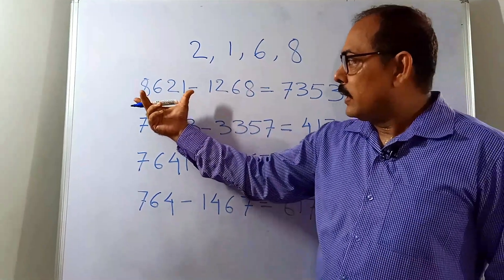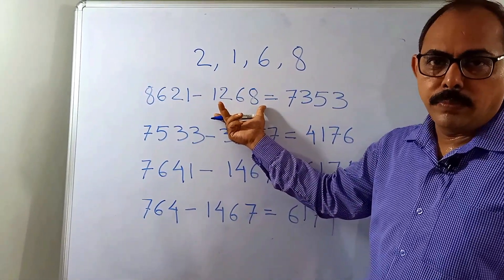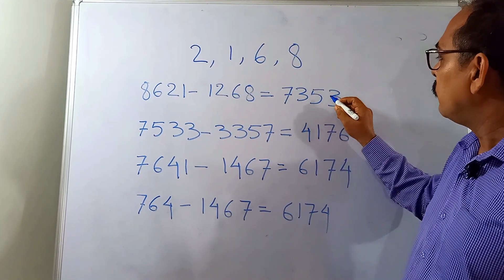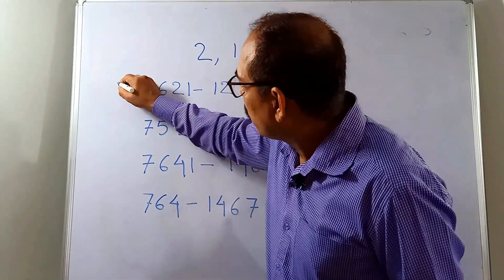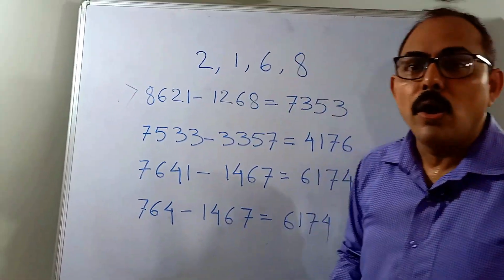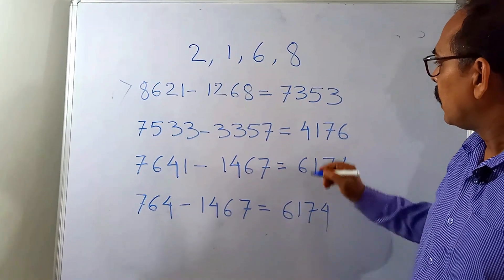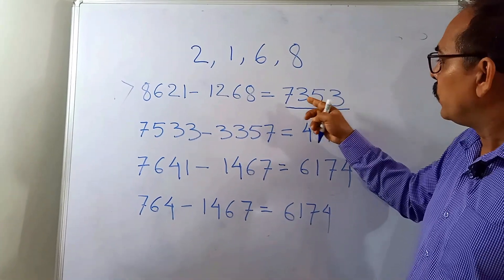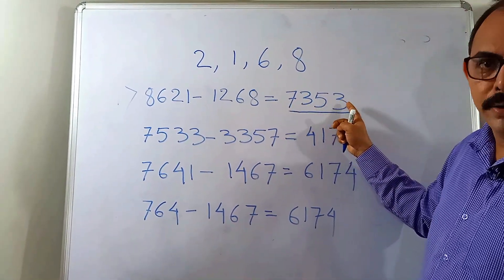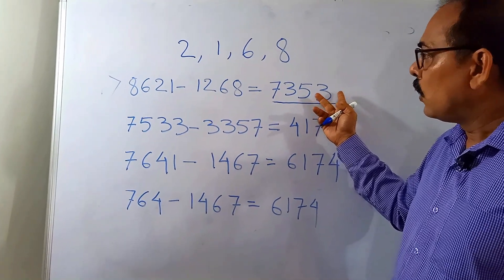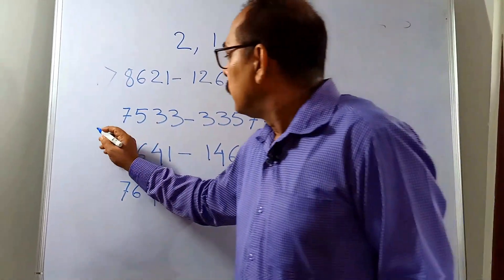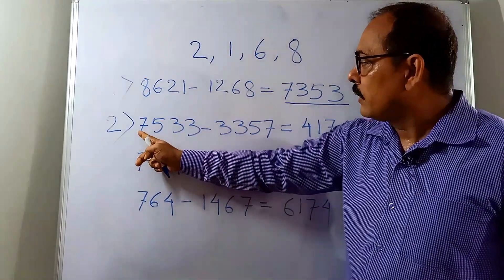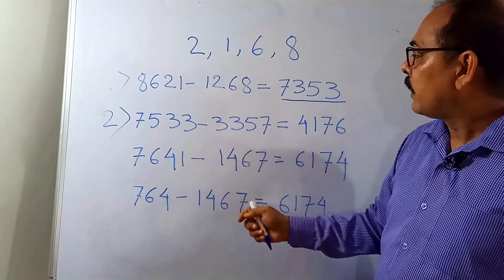If you subtract the smallest number from the largest number, 8621 minus 1268, the result is 7353. That is the first step of our operation. Next, with these four digits 7, 3, 5, 3 we go to the second step — we make the largest number: 7533.